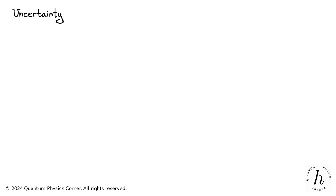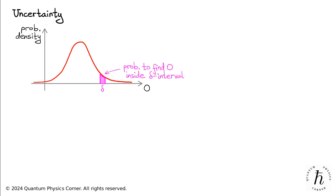Let's consider an observable O, which could for example denote the position or momentum of a quantum particle. Suppose this curve represents the probability density of O. That is, if we take a tiny interval delta, the corresponding area under the curve will give the probability that the outcome of a measurement of O falls within the delta interval.